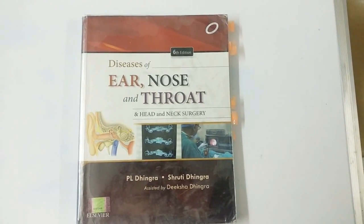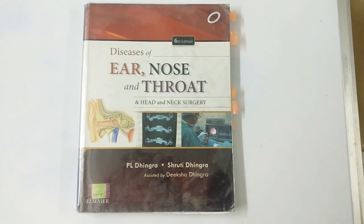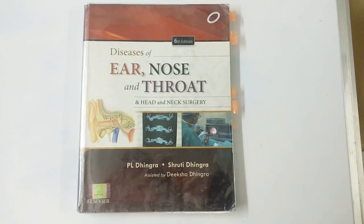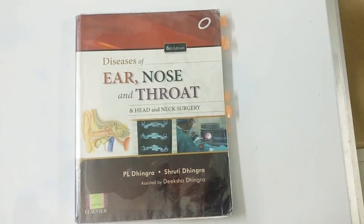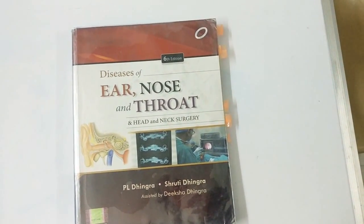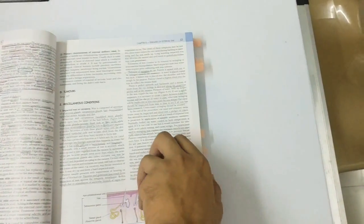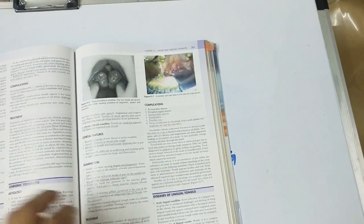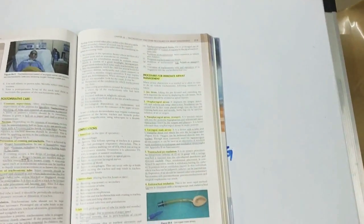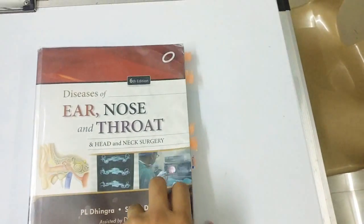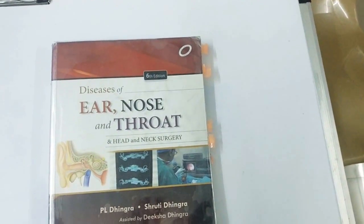The first book that I am going to talk about is ENT by Dhingra. It is one of the standard books of ENT and used by everyone. It has covered all the topics and has very good diagrams and pictures. It is still being used by many doctors too.